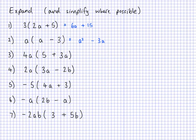Now the next one, I've got a letter and a number on the outside. I'm going to treat 4a as one item, and it's going to multiply to each thing inside. So 4a multiplied by 5 is 20a. And 4a multiplied by 3a — I can multiply the numbers together, and a times a is a squared, and it's positive — so 4 times 3 is 12, giving us plus 12a squared.